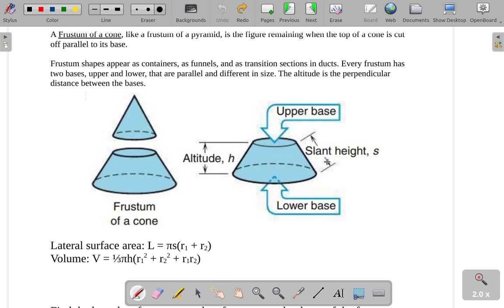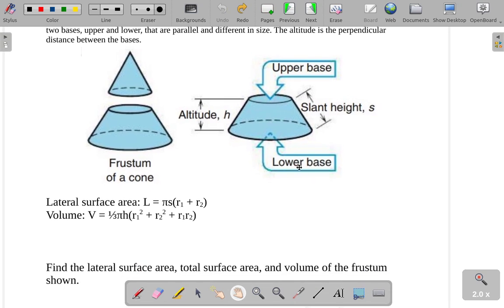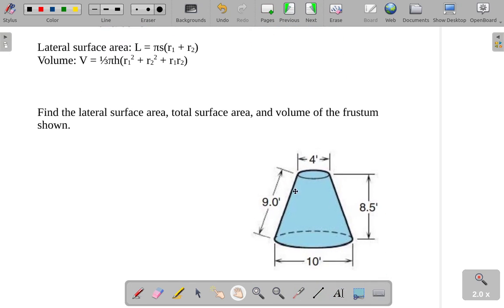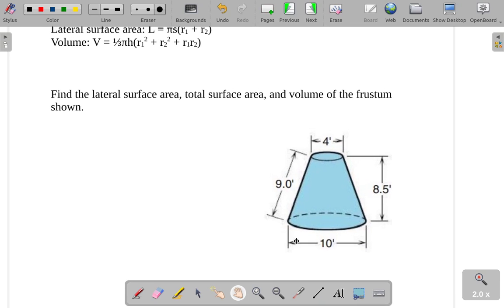We do talk about the slant height of a frustum of a cone as well. Remember, slant heights are always measured along the surface of one of those faces, so the slant height is at a slant. The altitude is the distance between the bases. We have the two bases, and we're going to have to keep track of them. You can see we have r1 and r2. Those would be the radii of each base, so if you said that this was r1, then this distance would be r2, or vice versa.